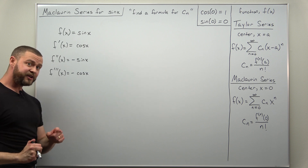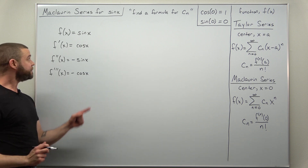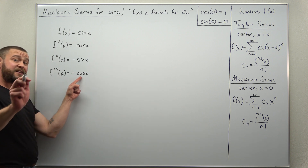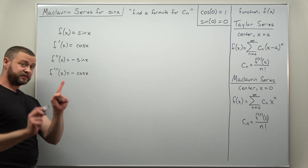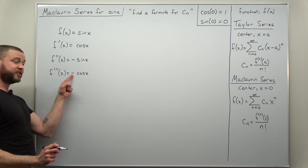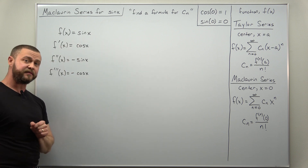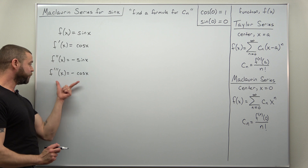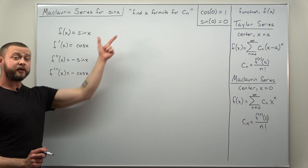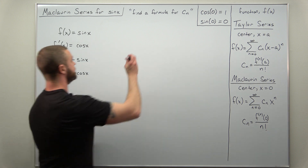Now if we were to differentiate this again to get the fourth derivative, we would get back to where we started, because when you differentiate cosine of x the derivative is negative sine of x — there's a negative there which cancels out and we get back to sine of x. So instead of putting our fourth derivative below here, let me put that over to the side and we're going to observe a pattern.